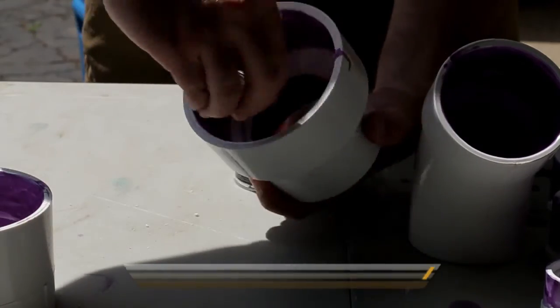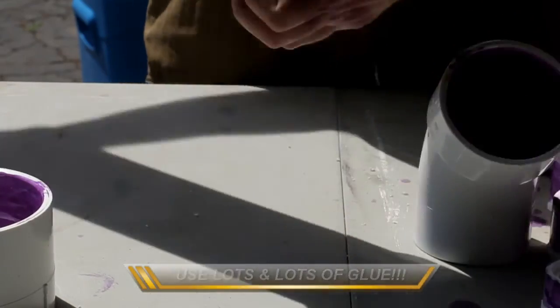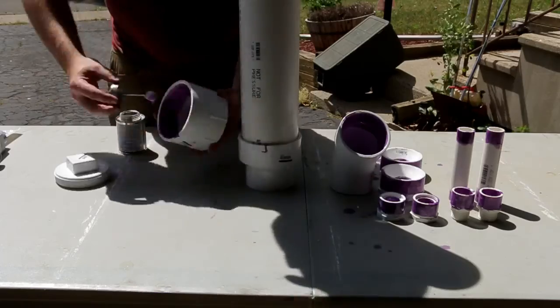Now you can apply your glue. Make sure to apply it extra heavy so you get a good seal. You do not want any air leaks. Take your PVC and press it together. Hold it no less than 30 seconds so you get a good bond.